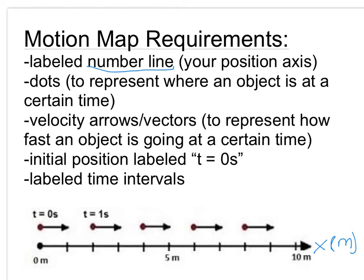...the object is at two meters. The third requirement is velocity arrows, and I will also call them velocity vectors. Arrows and vectors in this class are pretty much synonyms of each other. Now, these represent how fast an object is going at a certain time. So the longer the velocity arrow is, it means that the faster it's going.